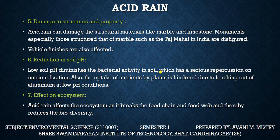Damage to structures and property: acid rain can damage structural materials like marble and limestone. Monuments — especially those made of marble such as the Taj Mahal in India — are disfigured. Vehicle finishes are also affected. Reduction in soil pH: the low soil pH demolishes bacterial activity in soil, which has a serious repercussion on nutrient fixation, meaning plants do not receive the nutrients they need. Uptake of nutrients by plants is also hindered due to leaching out of alumina at low pH conditions.